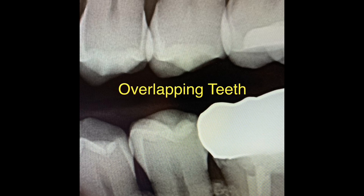The previous radiograph was taken using a bitewing with an XCP. One of the most challenging aspects of diagnosing interproximal caries is when x-rays are taken without XCPs, because that causes overlapping of the interproximal area. In such conditions, it is very hard to identify the extent of caries and misdiagnosis can occur.